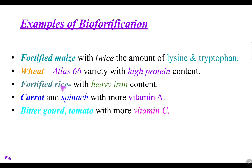Fortified rice is another example which has high iron content. There are number of examples like carrot and spinach with more vitamin A content. These contents are important for our body — protein, vitamin, iron, vitamin A, and vitamin C, which is found in bitter gourd and tomato, which have more content of vitamin C. Thus these are the examples of biofortification.